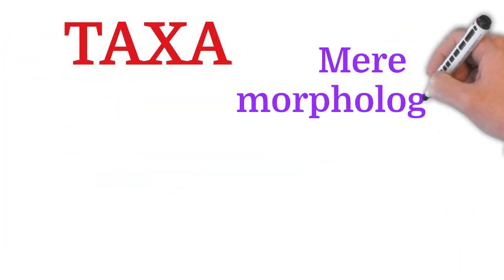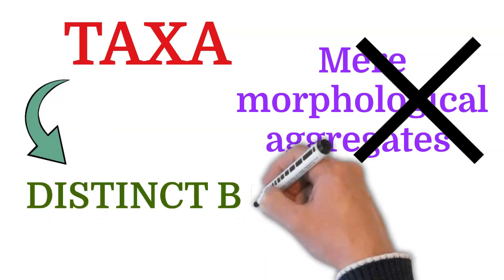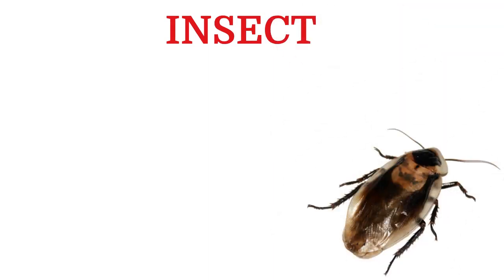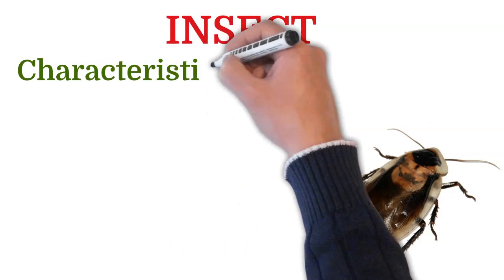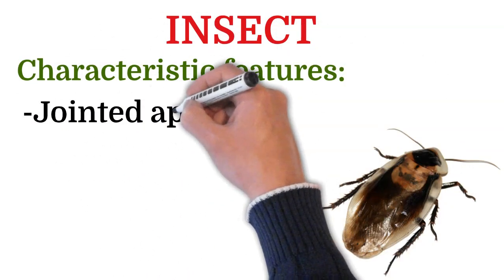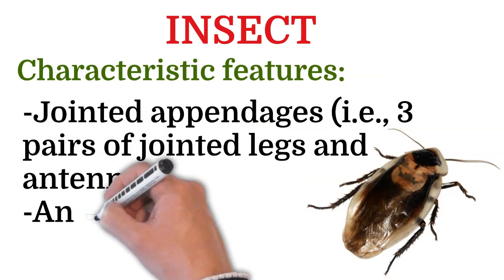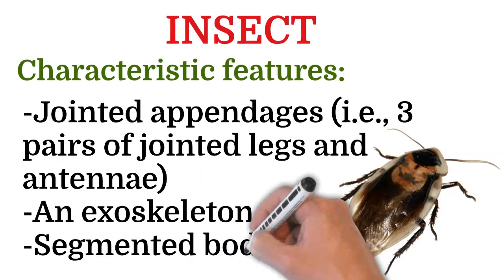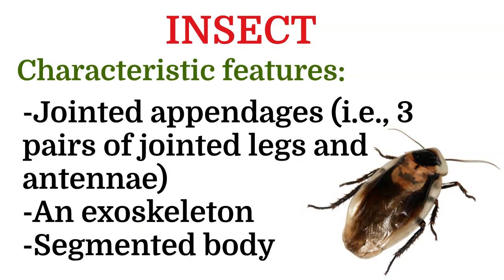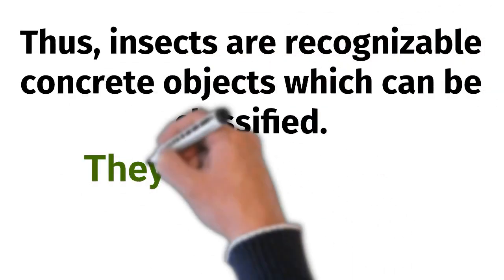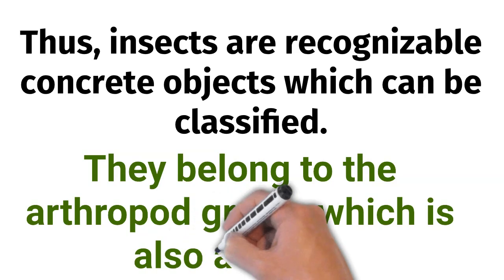Taxa are not mere morphological aggregates but are distinct biological entities. For example, insect is a taxon. The insect group or taxa have some characteristic features like jointed appendages — that is, three pairs of jointed legs and antennae — an exoskeleton, segmented body, etc. Thus insects are recognizable concrete objects which can be classified. They belong to the Arthropod group, which is also a taxon.